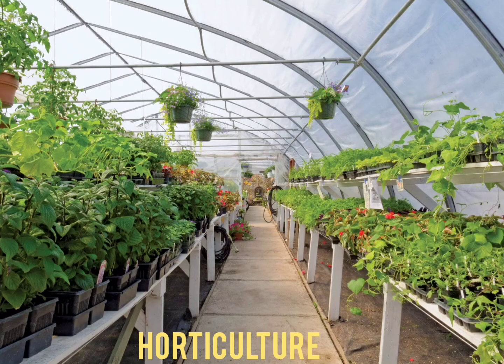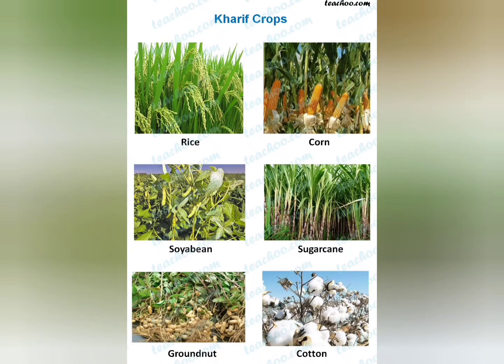Now we will start with the Kharif crop. These are sown in the rainy season starting from the month of June and harvested around October. Examples include paddy, maize, cotton, soybean, and groundnut — these all are Kharif crops.